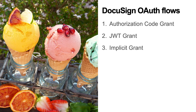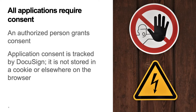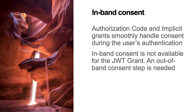See the show notes for links to a video and documentation about the OAuth authentication flows. To meet modern information security standards, an authorized person must provide consent before an application can act on behalf of or impersonate a user. Application consent is tracked by DocuSign; it is not stored in a cookie or elsewhere on the browser. The Authorization Code and Implicit Grant flows smoothly handle the consent step when the user authenticates with the application for the first time. This is called in-band consent since it occurs within the authentication flow.